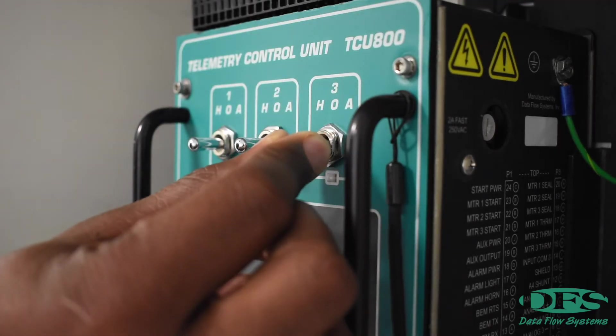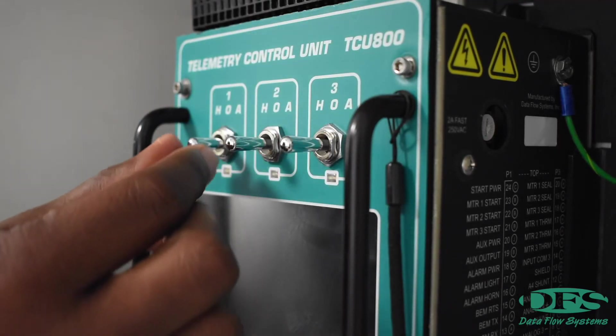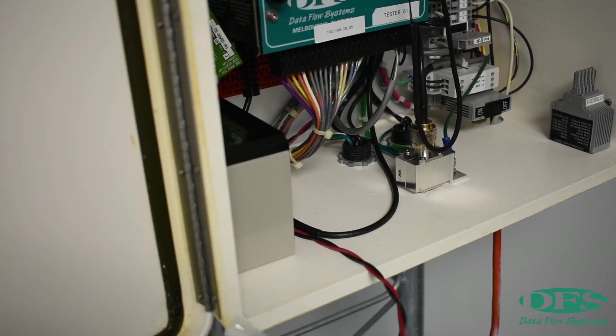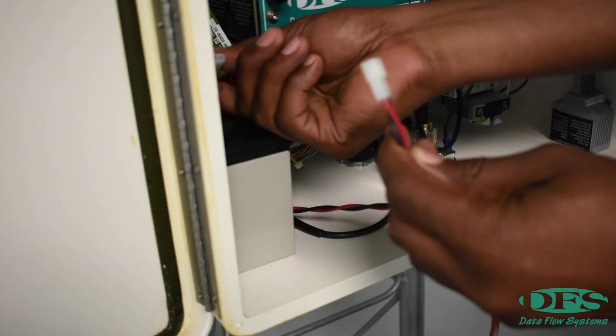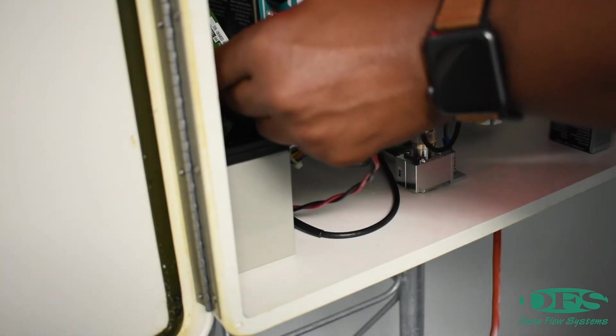Place the HOA switches in the off position. Once the HOA switches are in the off position, reconnect the battery to power up the TCU-800.